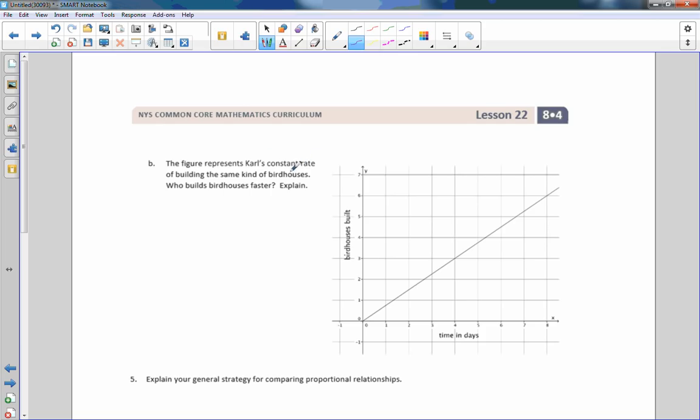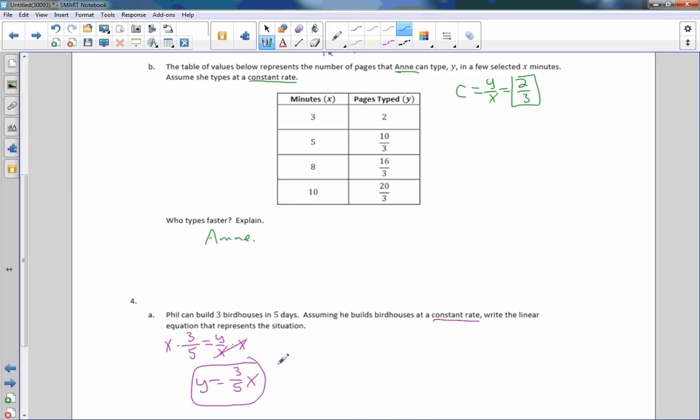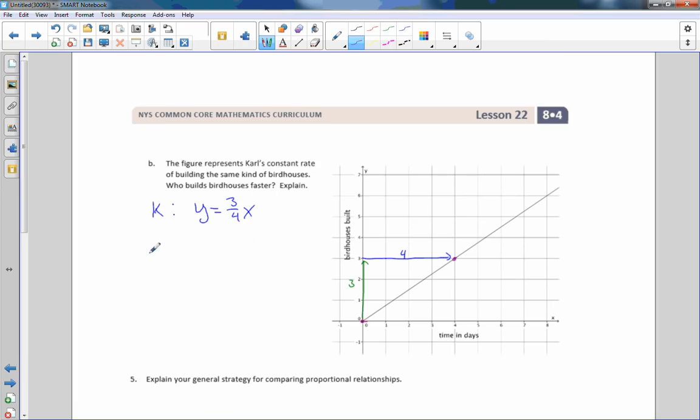Part B, the figure represents Carl's constant rate of building the same kind of birdhouses. Who builds birdhouses faster? So now I have a constant rate. I have a straight line going through the origin. I just need to find that rate by looking for an integer point right on a corner of a grid right there. And in order to get there, I have to go up three and then to the right one, two, three, four. So Carl's is Y equals three over four X. Now if I go back, Phil is three over five X. So Phil can make three birdhouses in five hours. And Carl can make the same number of birdhouses in one hour less. So who's quicker? Carl. He can build three birdhouses in one hour less than Phil.